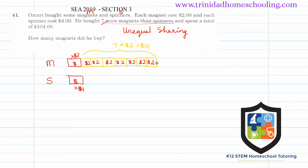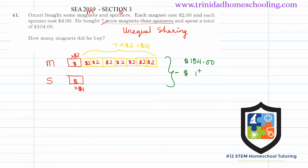These seven extra magnets that make the quantities unequal cost $14. The total spent on all magnets and spinners is $104, so the equal portion plus these seven extra magnets equals $104. To find the cost of the equal number of magnets and spinners, we remove the unequal part by subtracting $14, giving us $90.